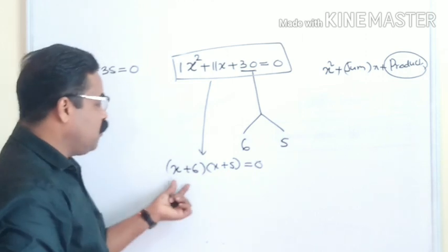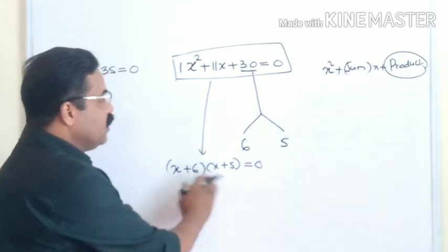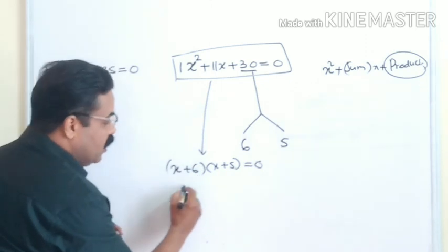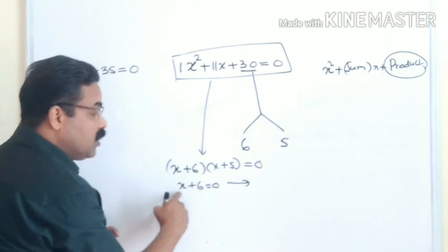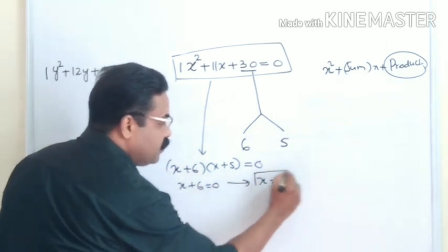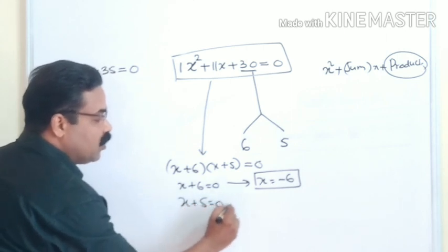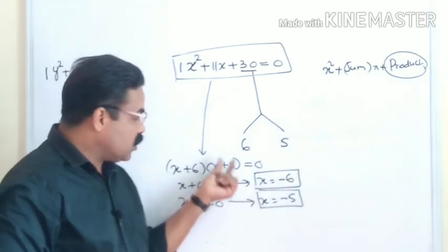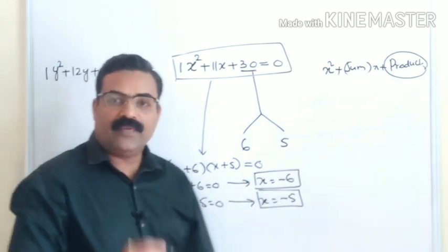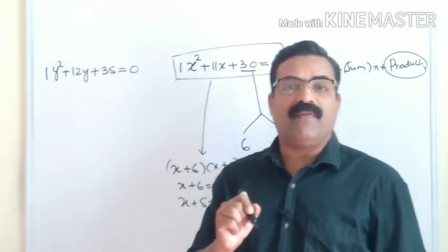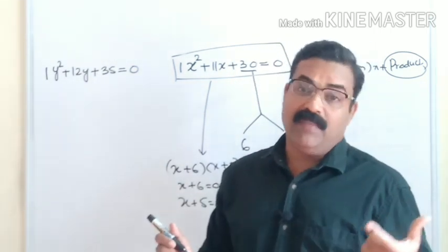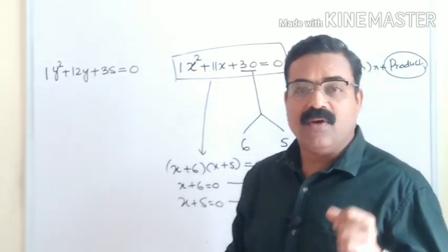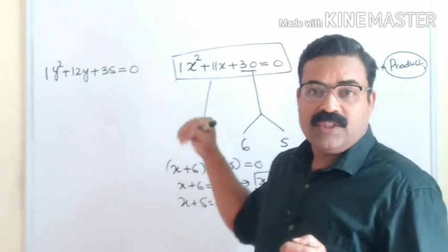Once you have split the number, write the equation as (x + 6)(x + 5) = 0. Equating each factor to zero: x + 6 = 0 gives x = −6, and x + 5 = 0 gives x = −5. So we get two different values for x: x = −6 and x = −5. A quadratic equation always gives two values, which may be different or the same.